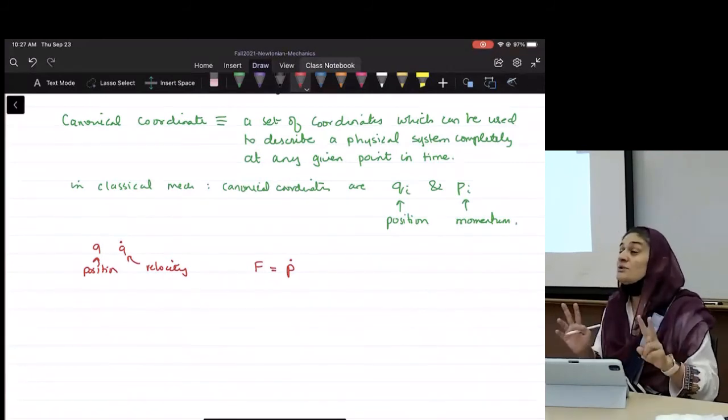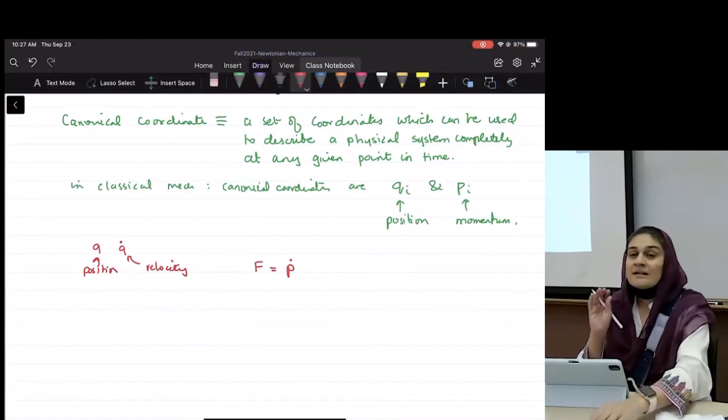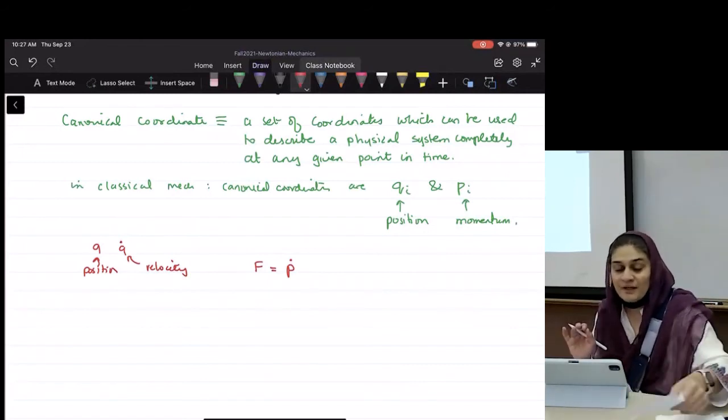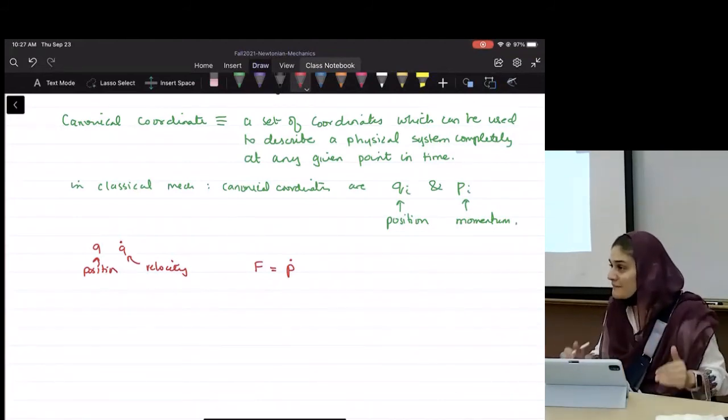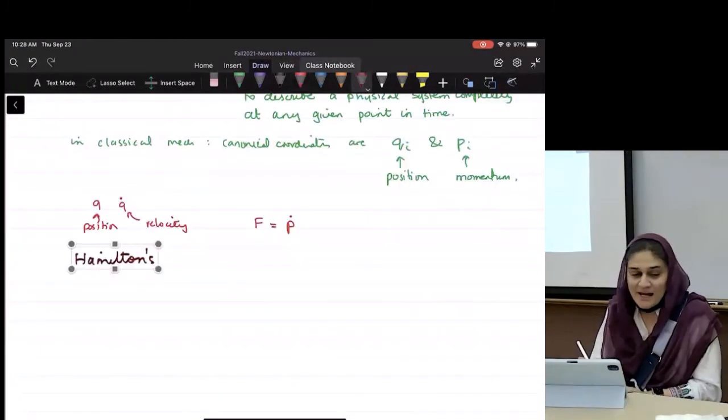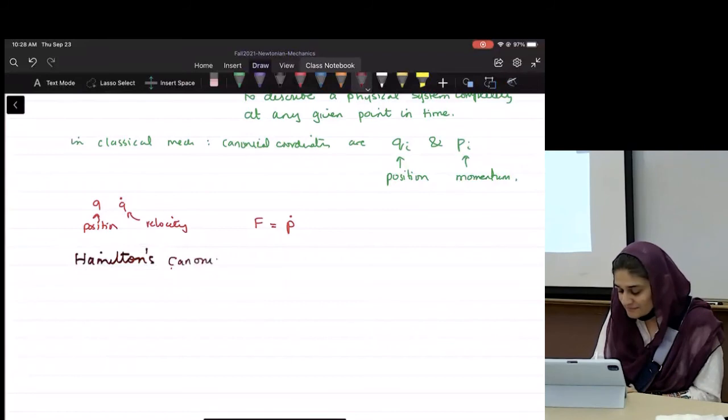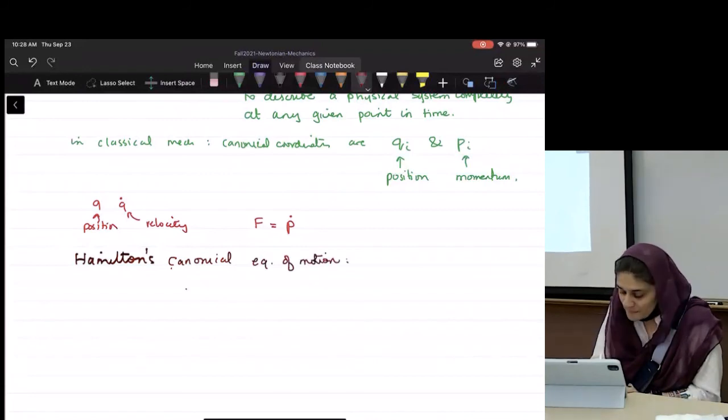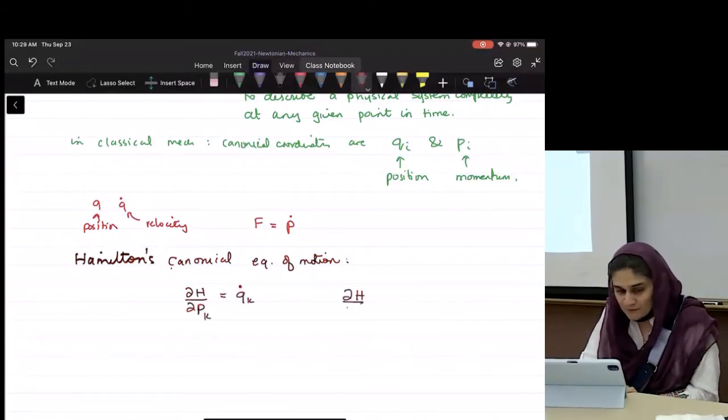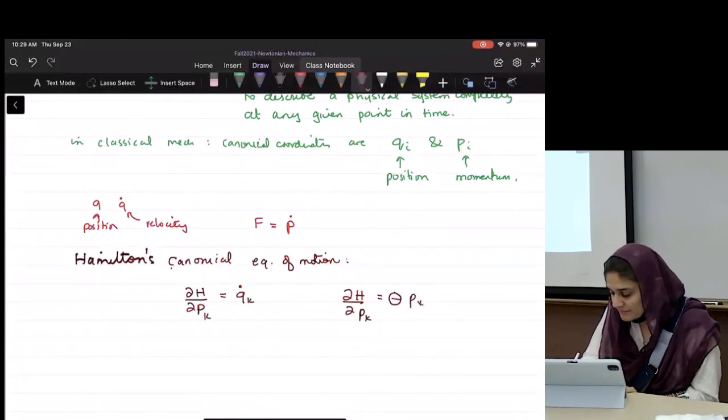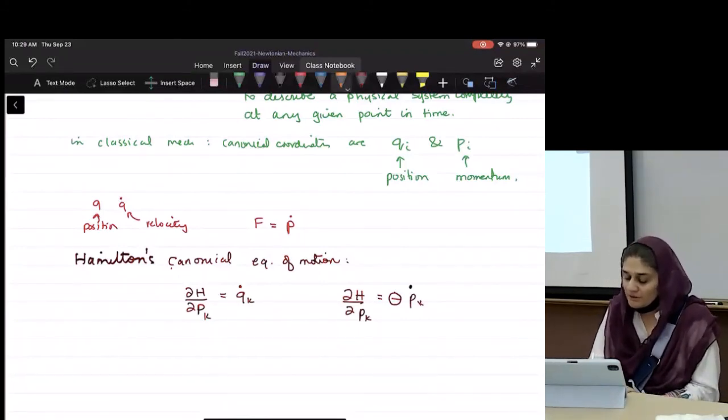Then he came up with these two equations that he called his canonical equations of motion. And I want you to write them in terms of his canonical coordinates, and then I'll show you how to apply them. Good, let's just write them down. Hamilton's canonical equations of motion: partial h over partial p equals q dot, and partial h over partial q equals minus p dot.